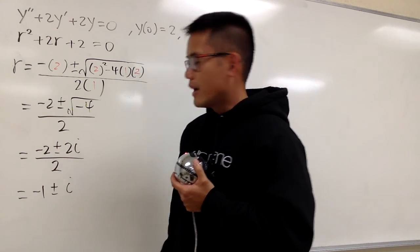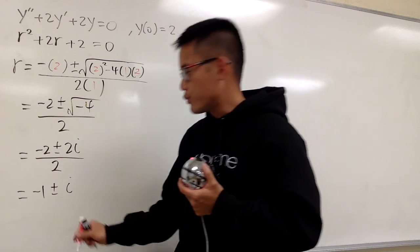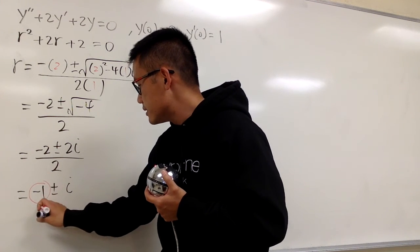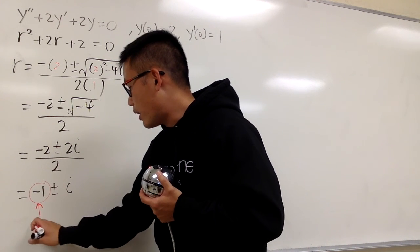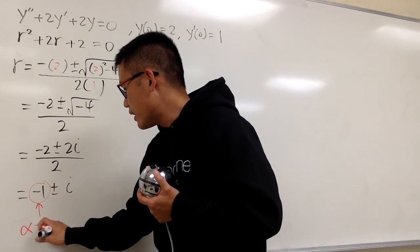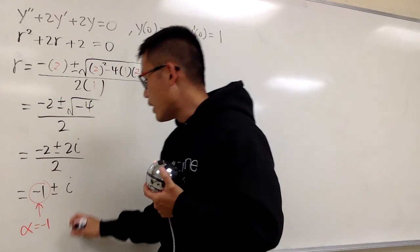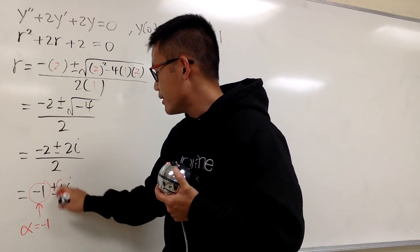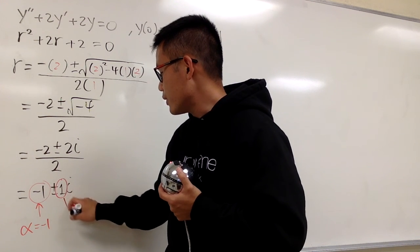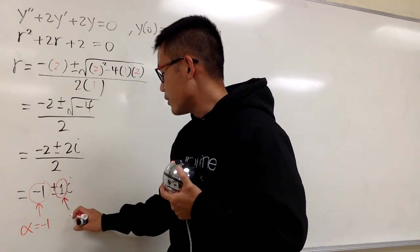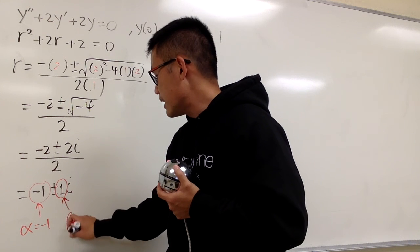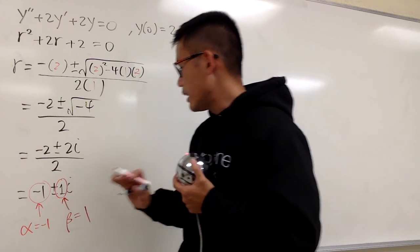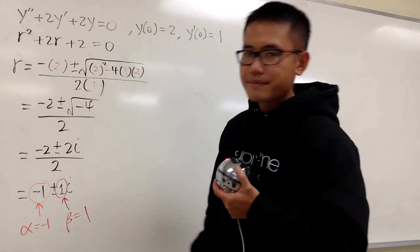...reduce that, which is just 1. So right here, this is the real part, so that's the alpha. Alpha is negative 1. And right here, this is technically 1i, so beta is equal to 1.